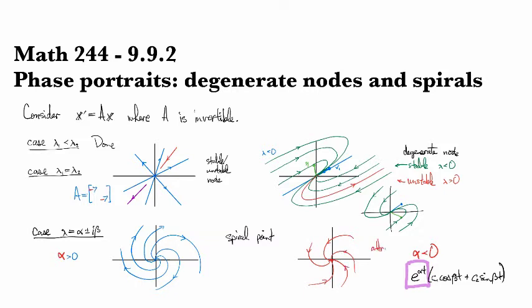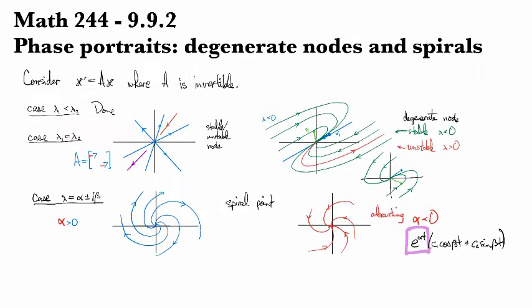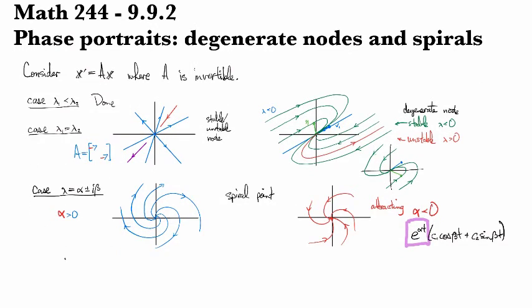And this would be an attracting fixed point or an attracting equilibrium point. And then you might have the question, how do you know whether it's going counterclockwise or clockwise?